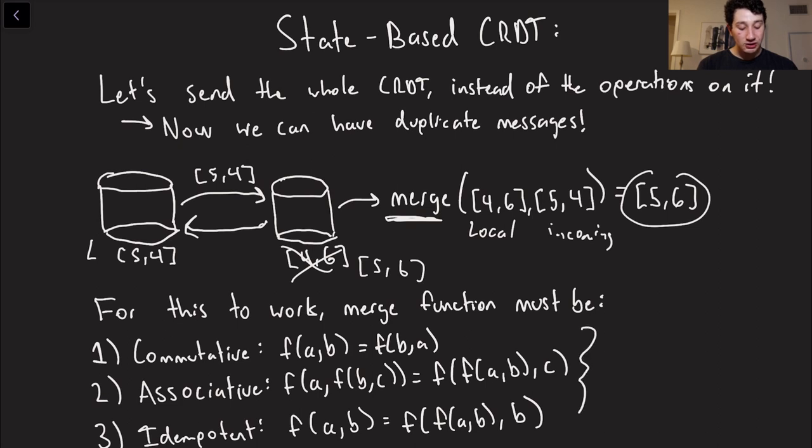So I have the concrete mathematical definitions down here. You don't have to focus too hard on those, but if it helps you understand what I mean when I say these things, that's good. So the point of this is if the merge function satisfies all three of these things, it means that we don't actually have to care about what order we receive these state-based updates in, unlike the operational updates, which means we can just go ahead and basically just fire out state-based updates all over the place.